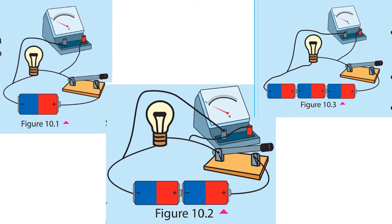In the third picture, you have to connect three dry cells with the third bulb and the switch as shown in that figure. Now close the switches of all three circuits at the same time. Compare the brightness of the bulbs and record the voltmeter reading.